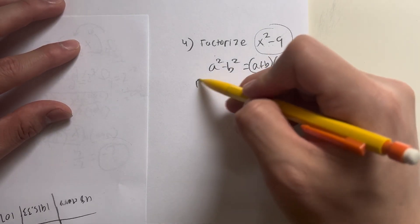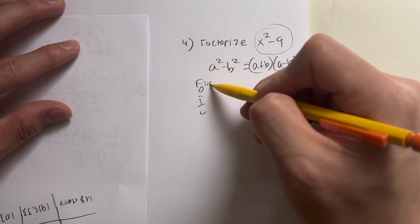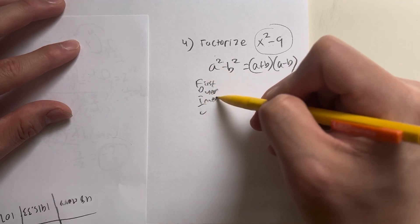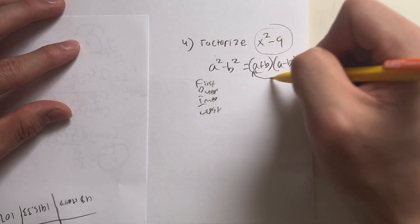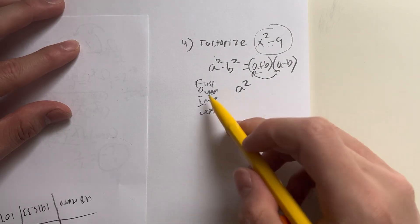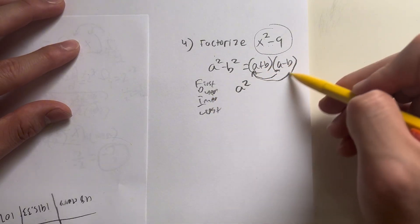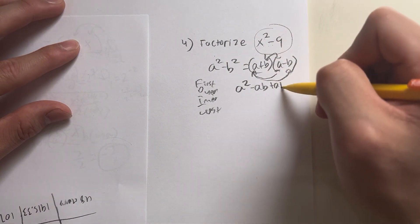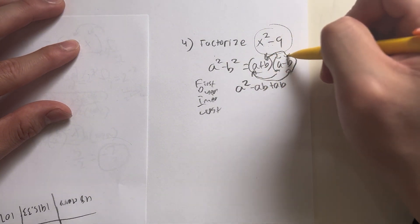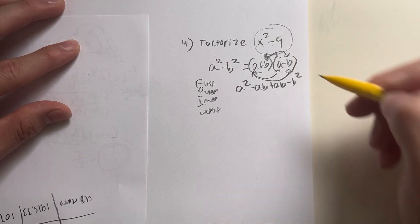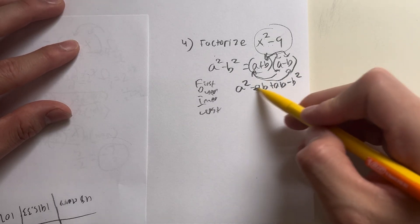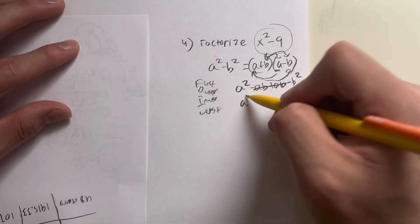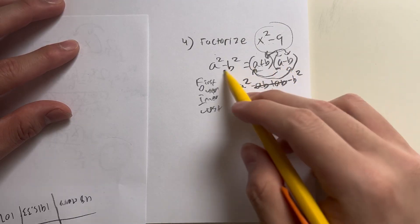I'm going to show you, because if you FOIL, F-O-I-L, first, outer, inner, and last. First you have a times a, which is a squared. Next, for outer, a times negative b gives us negative ab. For inner, which is b times a gives us ab. And last, which is b times negative b, which gives us negative b squared. If you combine like terms, negative ab and ab cancel, give you a squared minus b squared. So these two things are the same.